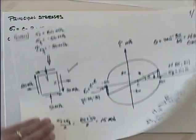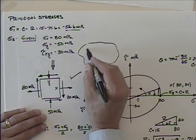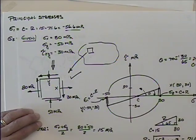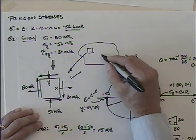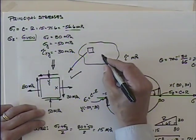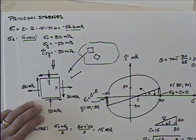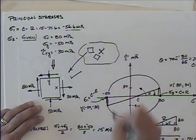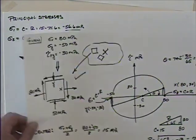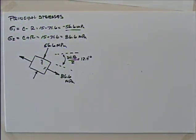If you had a piece of machinery and pulled this element off and wondered what the minimum and maximum stresses are, they would occur on an element rotated something like that. This might be interesting if you always get cracks in a certain direction — you'd want to look at that. Those are the principal stresses on a properly oriented element.